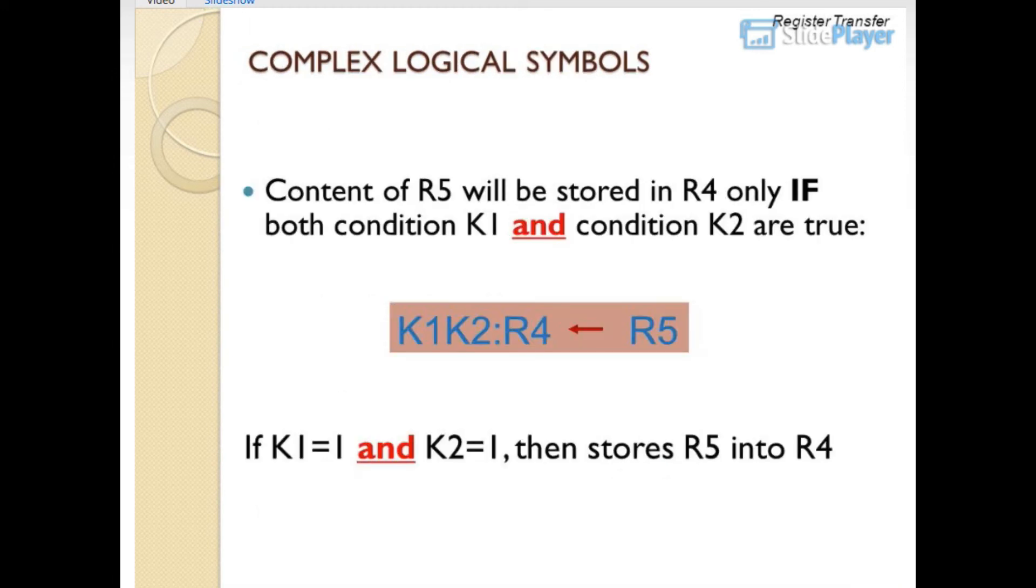Complex logical symbols: content of R5 will be stored in R4 only if both condition K1 and condition K2 are true. K1·K2: R4 gets R5. If K1 equals 1 and K2 equals 1, then stores R5 into R4.